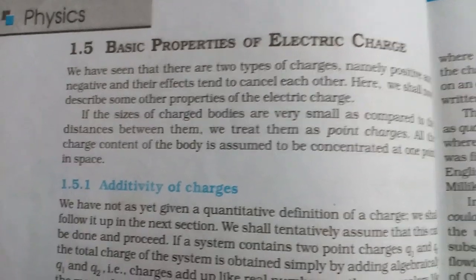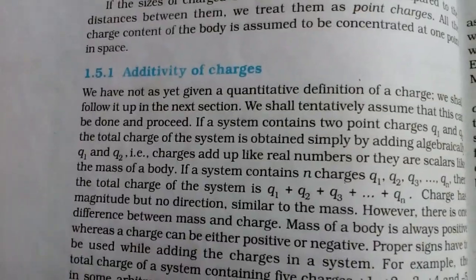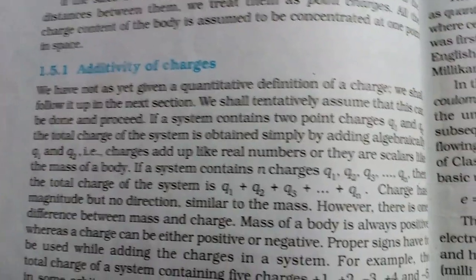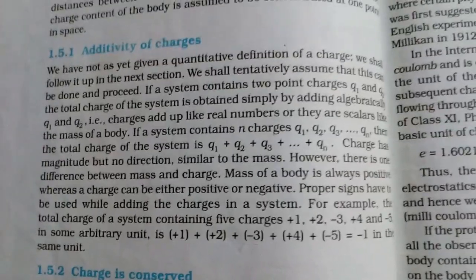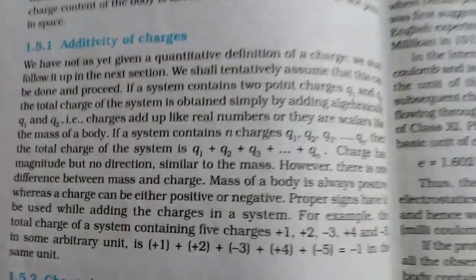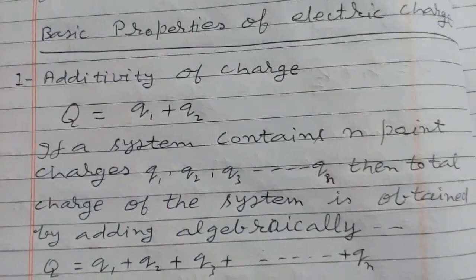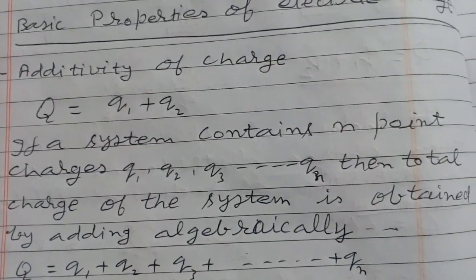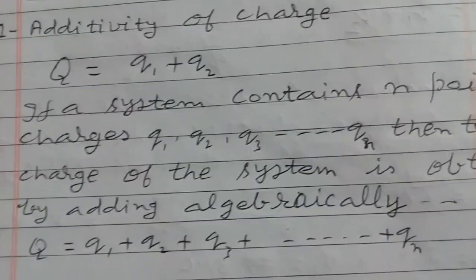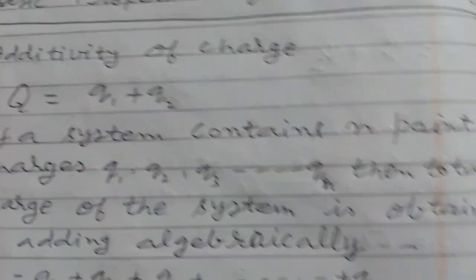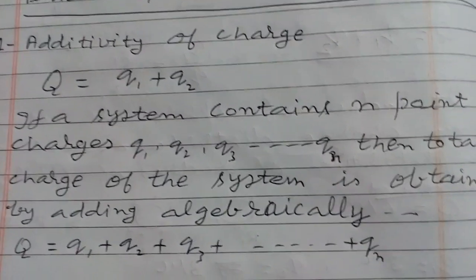Now we move to the basic properties of electric charge. Electric charge has three basic properties. The first is additivity of charge: we can add charges by the rules of algebra. Suppose a body has a charge of plus 4 microcoulombs and you give it minus 1 microcoulomb — the net charge becomes 3 microcoulombs. If a system contains n point charges q1, q2, q3 up to qn, the total charge Q equals q1 + q2 + q3 + ... + qn.